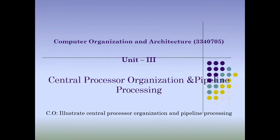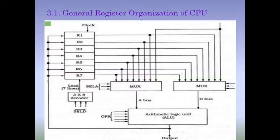Unit number three is Central Processor Organization and Pipeline Processing. The course outcome of this unit is to illustrate central processor organization and pipeline processing. The first topic of this unit, 3.1, is the General Register Organization of the CPU.